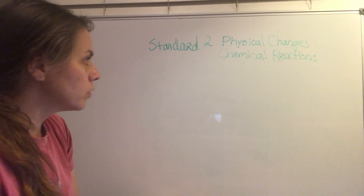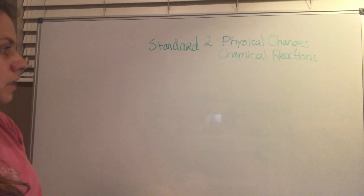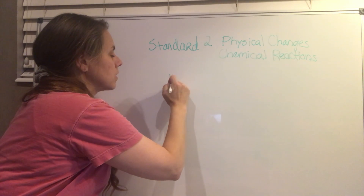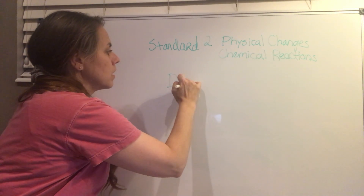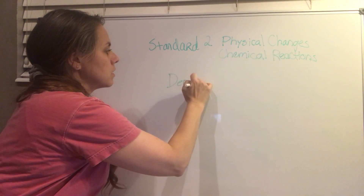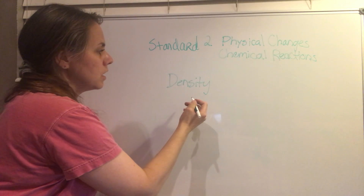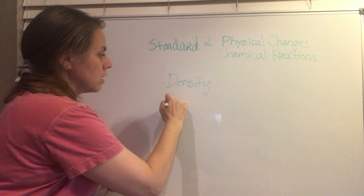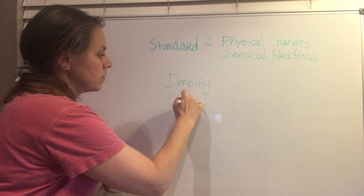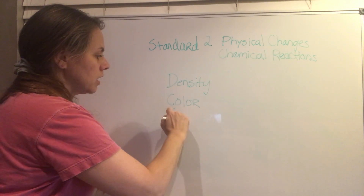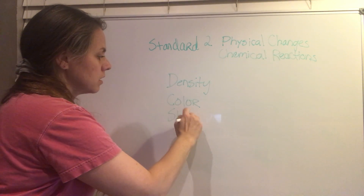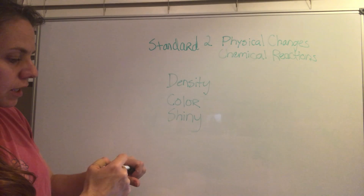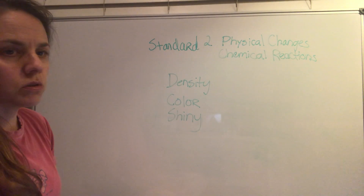Two other properties that we talked about a lot are density — the density of an object — and also color and shininess. Especially metals like silver, which is shiny.